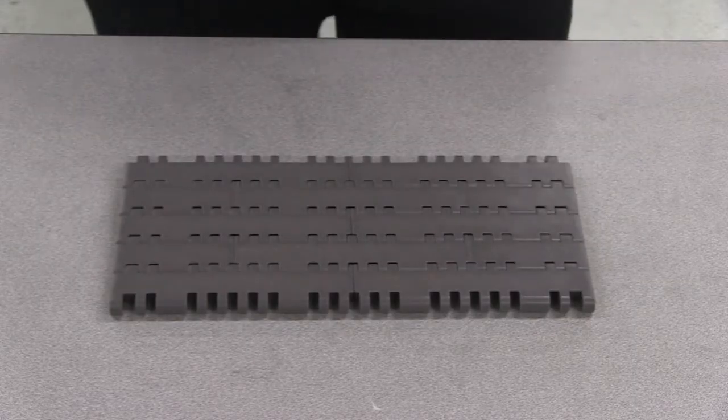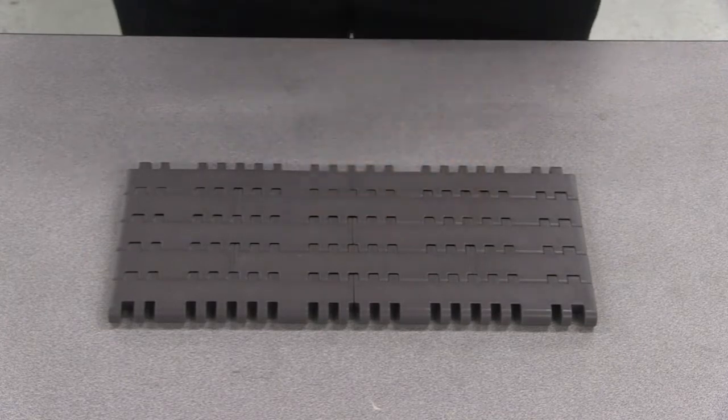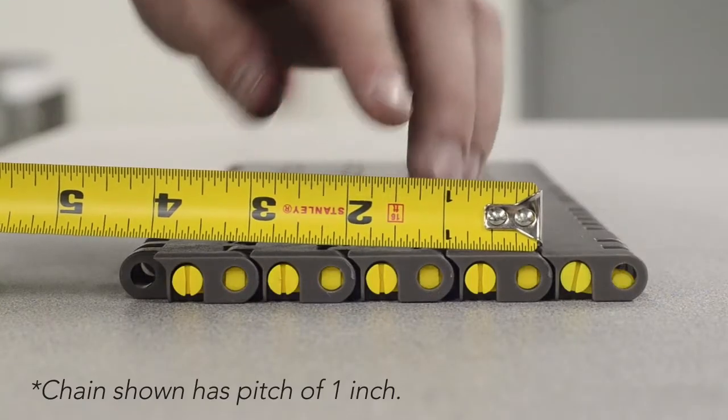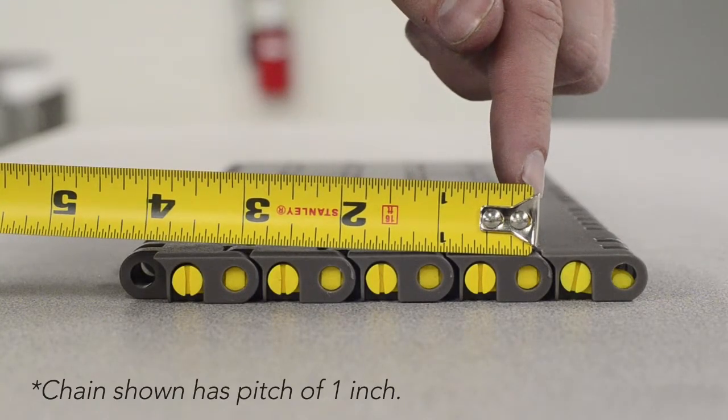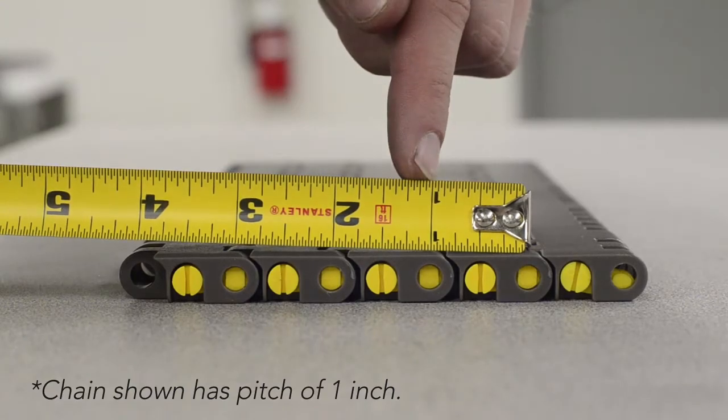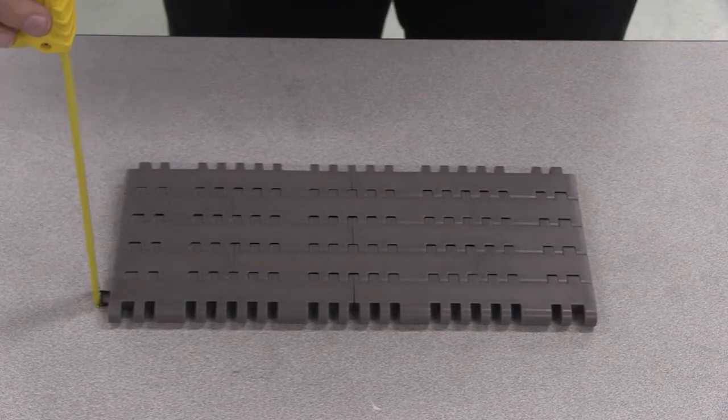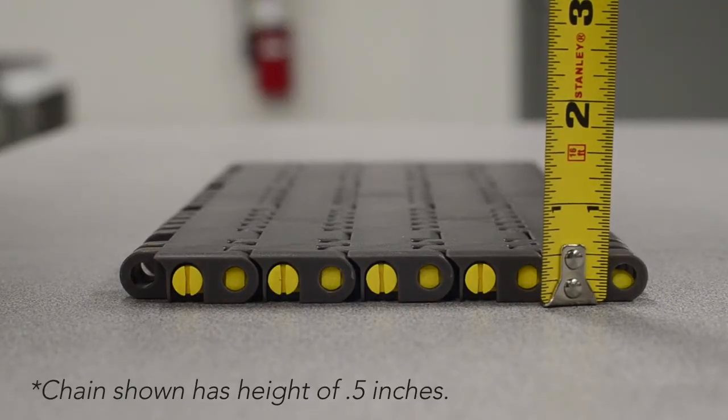For MatTOP chains, lay the chain flat. Use a tape measure to measure the pitch and height of the chain. For chain pitch, measure from the centerline of the pin to the centerline of an adjacent pin. For chain height, lay the chain on its side and measure it from the top of the chain to the underside of the chain.